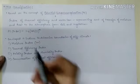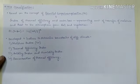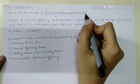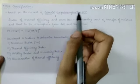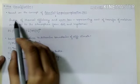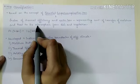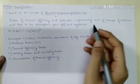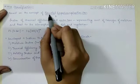In 1948, Thornthwaite revised his classification based on PE — potential evapotranspiration. Potential evapotranspiration is an index of thermal efficiency and water loss, representing the amount of transfer of moisture and heat to the atmosphere from soil and vegetation. For this he gave a formula, and for determining boundaries of different climates he developed four indices.